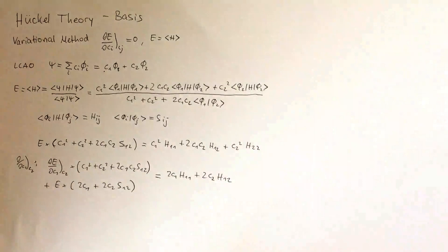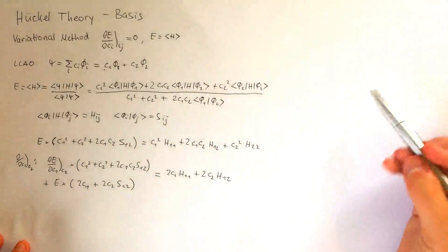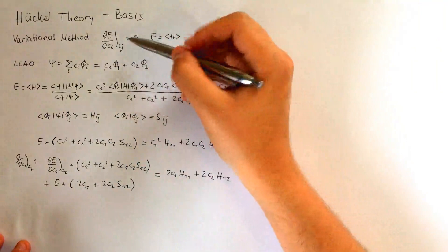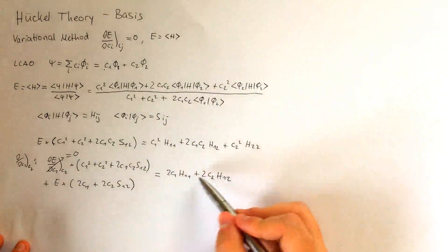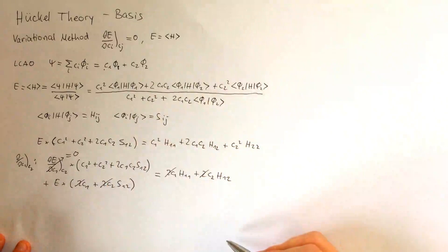And again this term vanishes. Now, since we said that in order to minimize the energy, we'll set this derivative to zero, we can immediately say that this term is zero, and so we're only left with this term on the left-hand side and this on the right-hand side. We also note there's a factor of two in every term, which we can just cancel.